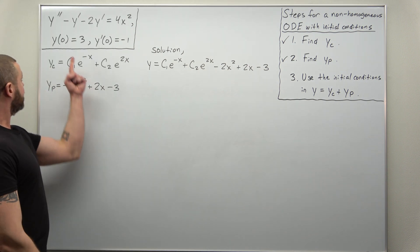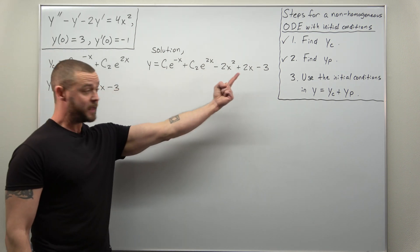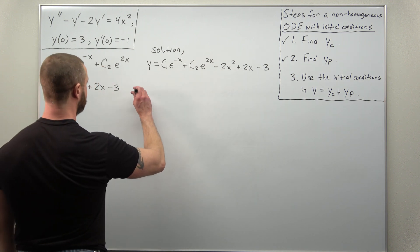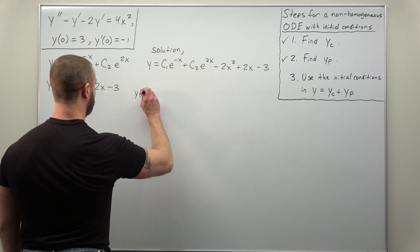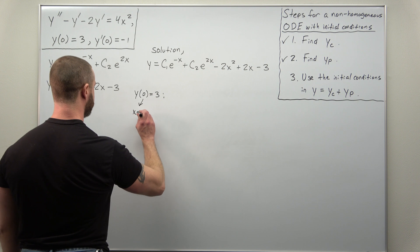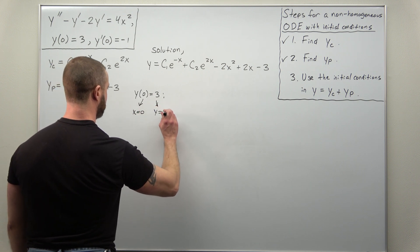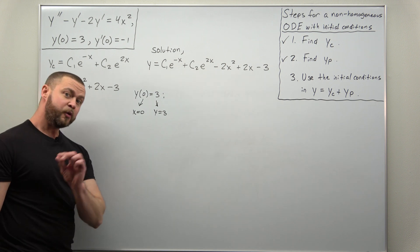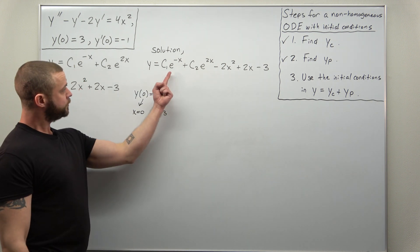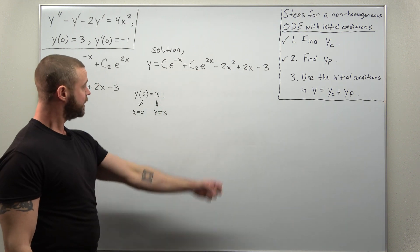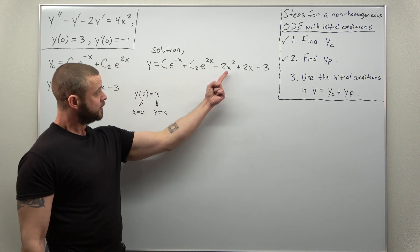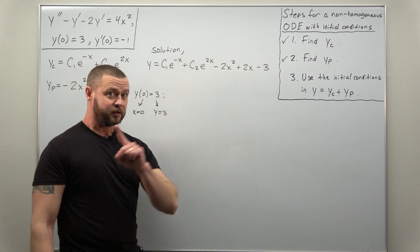All right. So we have our function initial condition. We can implement that right here in the function Y. So if we use that Y of zero equals three, this is telling us X is zero. And the Y value or function value is going to be three. Notice since X is zero, your exponentials give you E to zero, which is one. And then most of the terms from your particular solution go away, but you're going to be left with negative three.